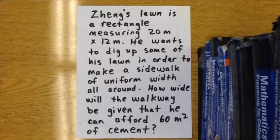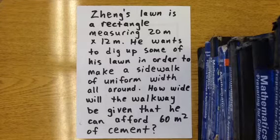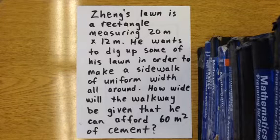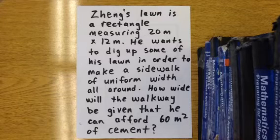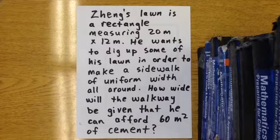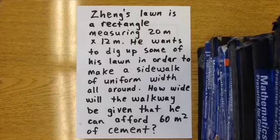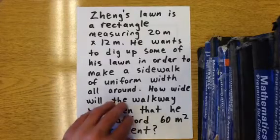In this question, we're going to talk about Zheng's lawn. Zheng's lawn is a rectangle measuring 20 meters by 12 meters. What Zheng wants to do is dig up some of that lawn in order to make a sidewalk of uniform width all around. We want to know how wide that walkway will be, given that he can afford 60 meters squared of cement.